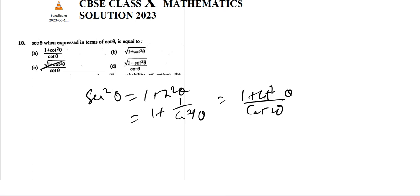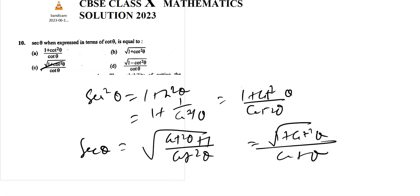1 plus cot theta, so sec theta value will be root over cot square theta plus 1 by cot square theta. So root over 1 plus cot square theta divided by cot theta. So answer is C. Next question, number 11.